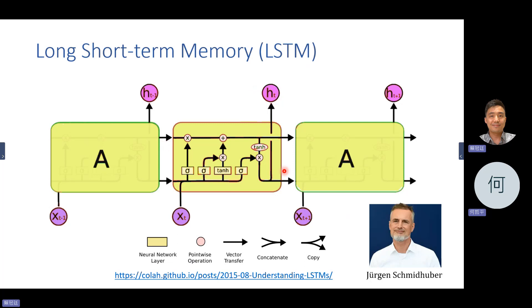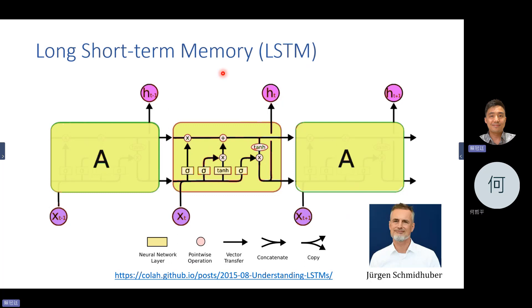Of course, only short memory is not enough. So researchers proposed a new model called LSTM — Long Short-Term Memory — which has two paths and can memorize forever or forget something. It's a smarter memory model.